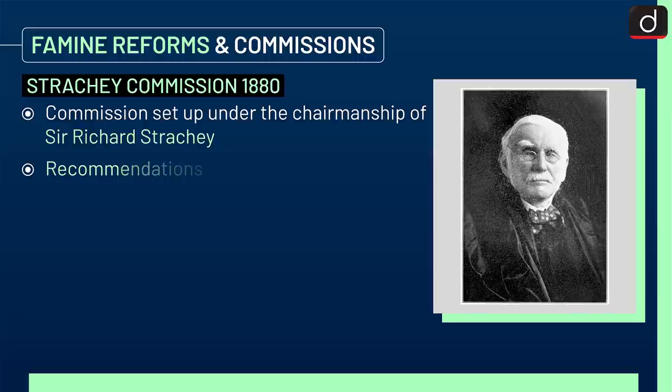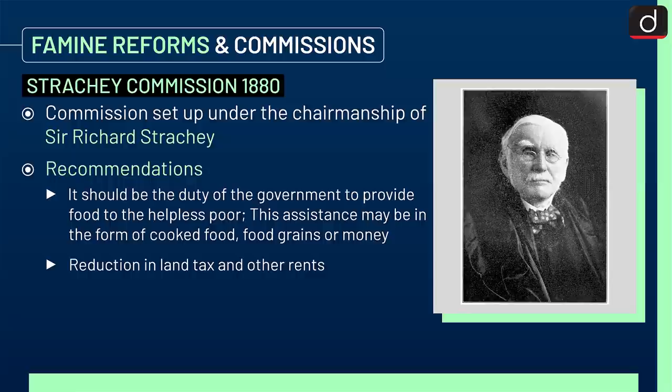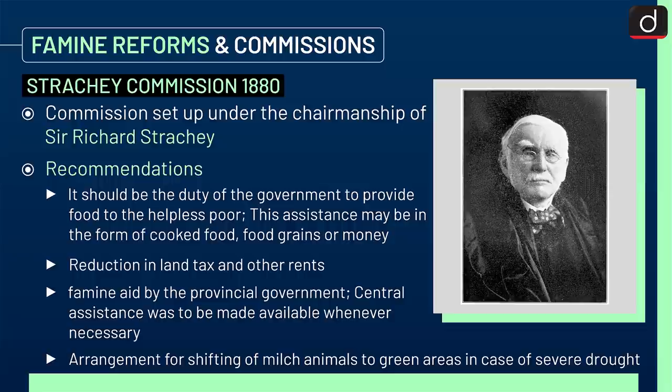Next is the Strachey Commission 1880, set up under the chairmanship of Sir Richard Strachey. Recommendations included: it should be the duty of the government to provide food to the helpless poor, in the form of cooked food, food grains or money; reduction in land tax and other rents; famine aid by provincial governments with central assistance whenever necessary; and arrangement for shifting of milch animals to green areas in case of severe drought.